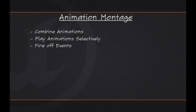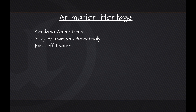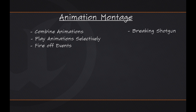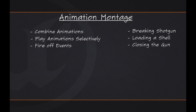Probably the best usage case for an Animation Montage would be for special animations, one-off things. A really good example would be reloading a shotgun. If it is an 8-round shotgun, they will break the thing down and then start ramming the shell — 1, 2, 3, 4 — reloading over and over again. Doing that as a montage in Unreal Engine 4, you would have one animation for breaking open the shotgun, then another single animation for loading a shell, and then another animation for closing the gun. The montage would immediately start playing and your Character would begin breaking down the shotgun.